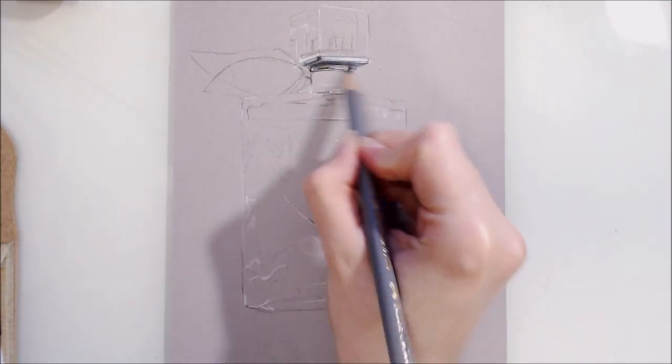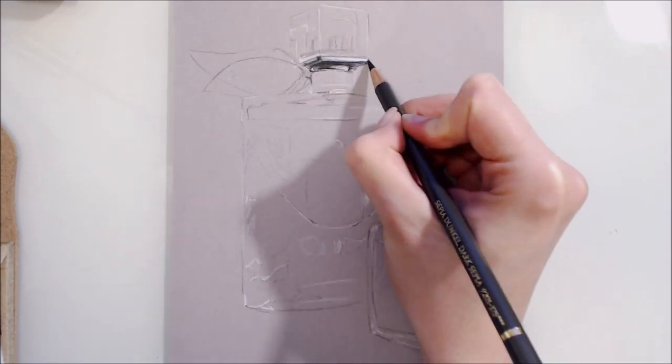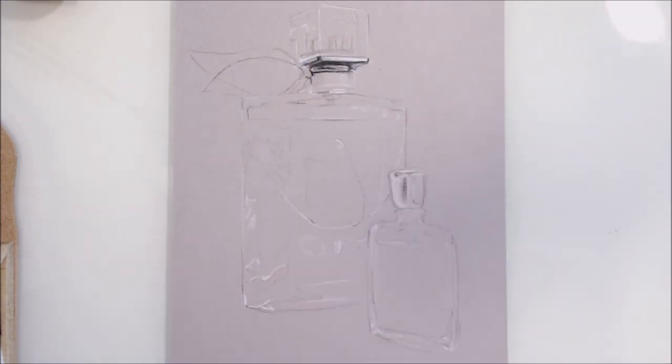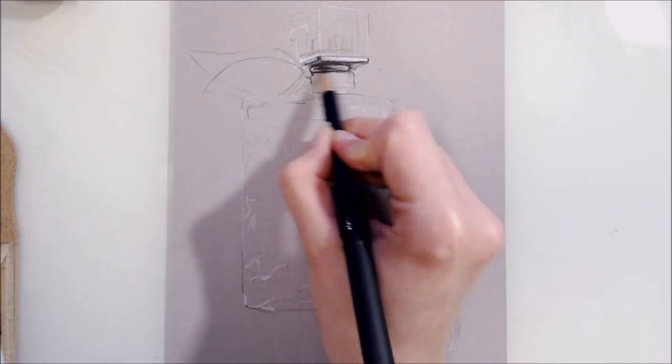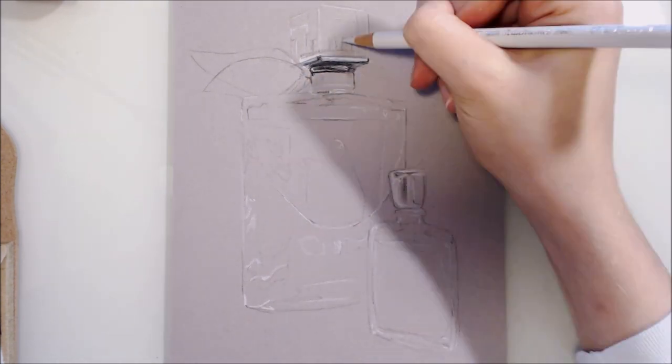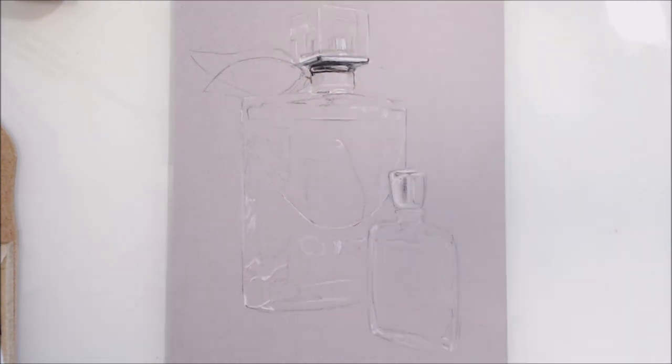So starting off with the coloring process for the metal parts of these bottles, there's a few metallic areas on these bottles. The larger one has a metallic section on the underside of the lid and on the neck of the bottle too, but the largest area of metallic color is the stopper of the smaller bottle.